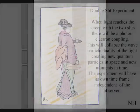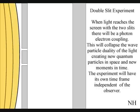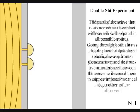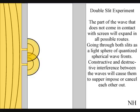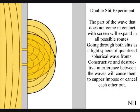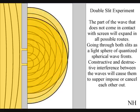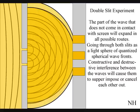The best way to see this happen directly with light is in the two-slit experiment. When the light reaches the screen with the two slits, the photons will react with the electrons of the screen. This will collapse the wave-particle duality of the light, creating new quantum particles in space and new moments in time. The part of the wave that does not come in contact with the screen will go through both slits. Interference between the waves will cause them to superimpose or cancel each other out. When this wave-function comes in contact with the screen, it will collapse, creating a moment in time and an interference pattern.